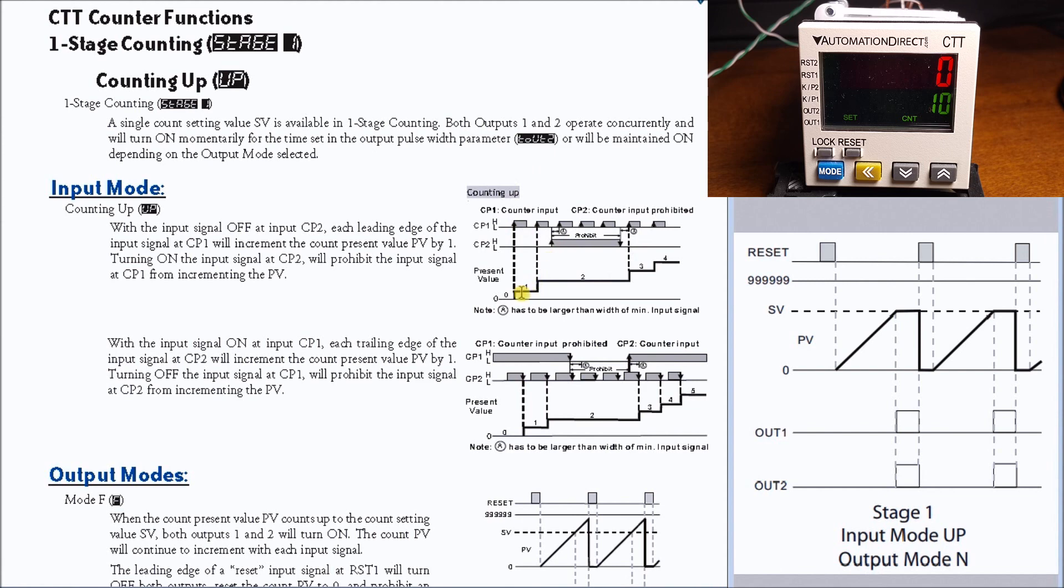Then with CP1 on all the time, it'll take the trailing edge of CP2 and the pulses coming in on that line and increment that set value.